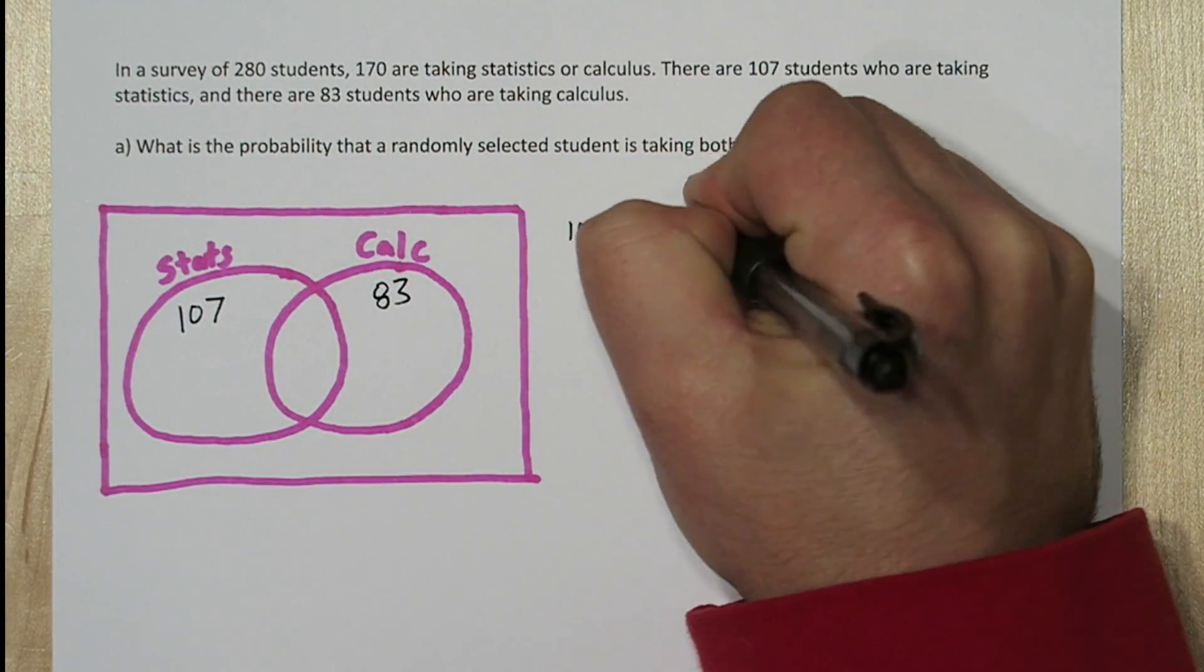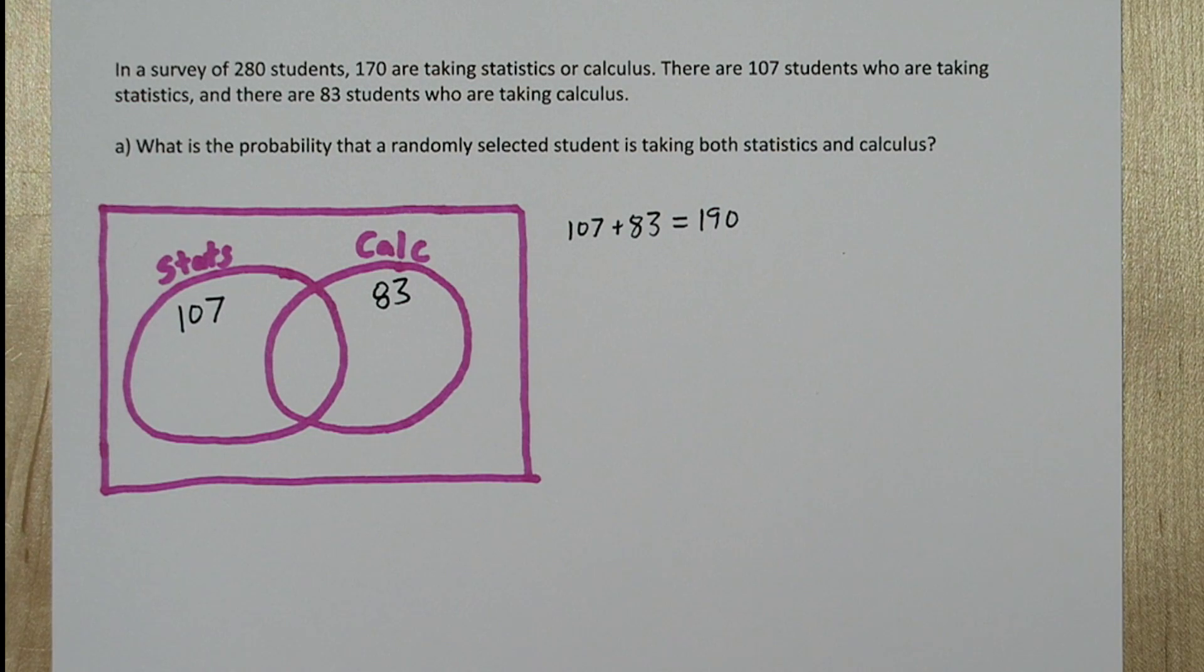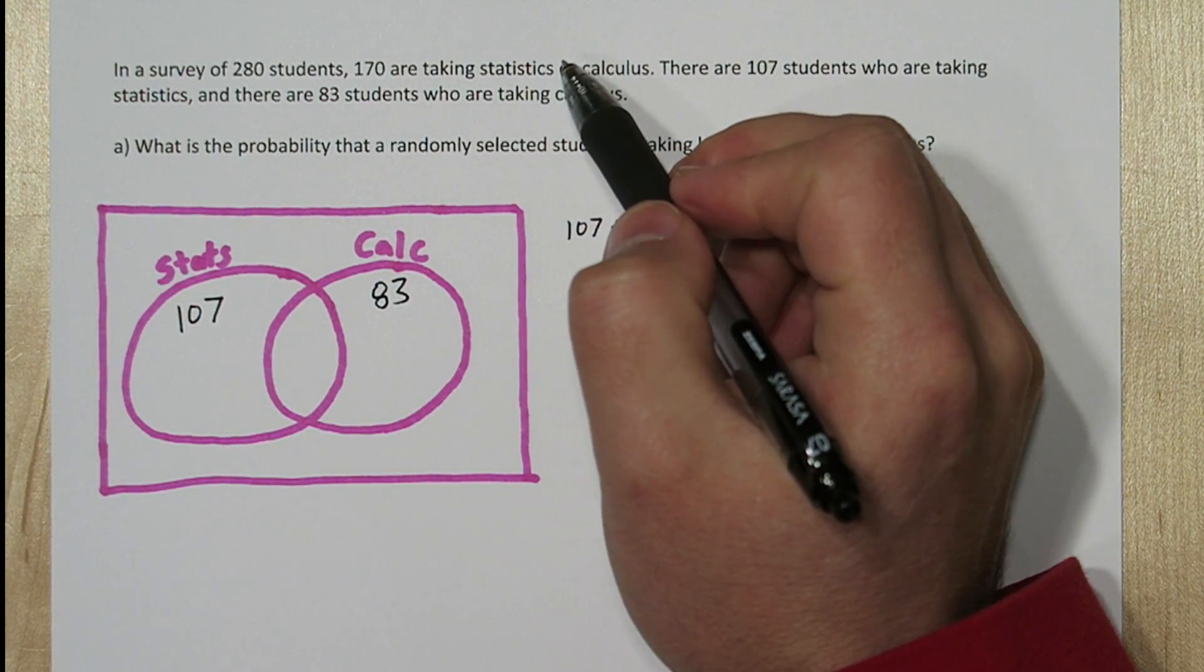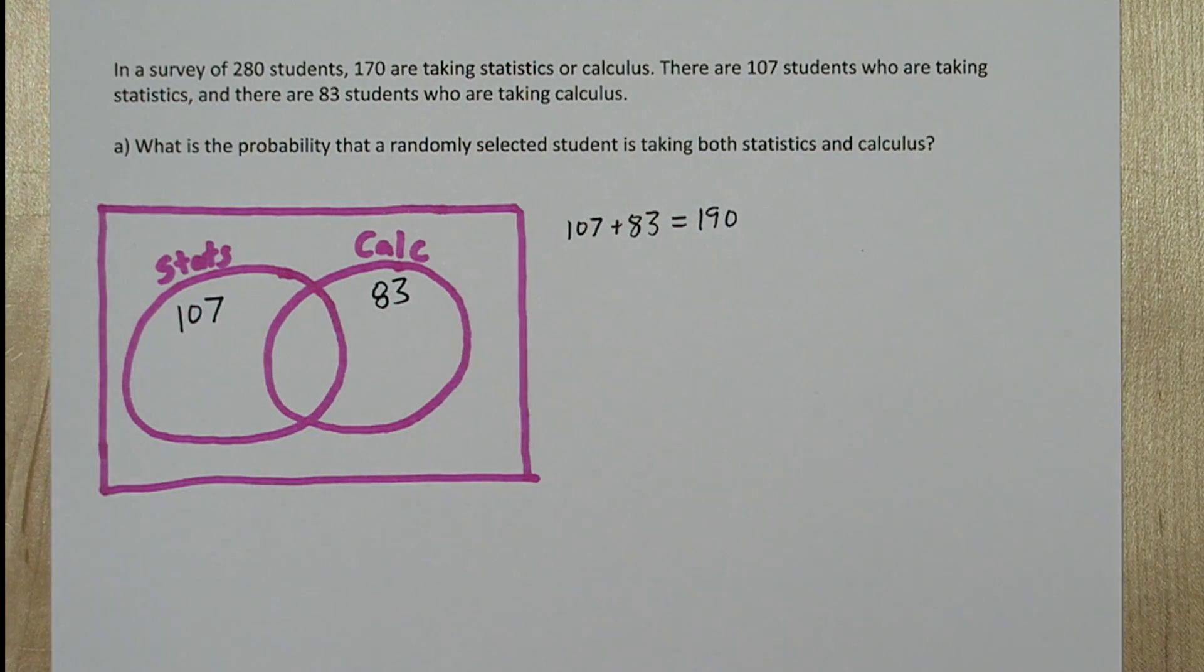But then we have a problem. 107 plus 83 is 190, but the problem says there's only 170 students who are taking statistics or calculus. So somehow we over counted by 20.